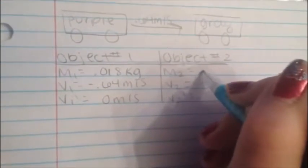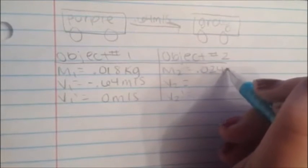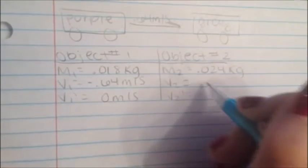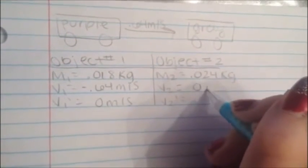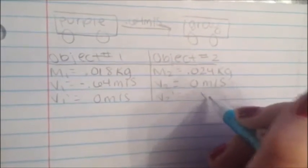Object number two had a mass of 0.024 kilograms. Its velocity before the collision was 0 meters per second, and we do not know its velocity after the collision.